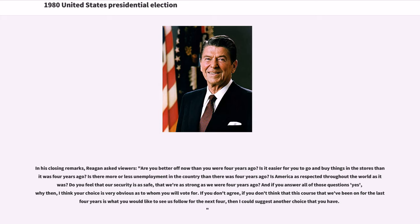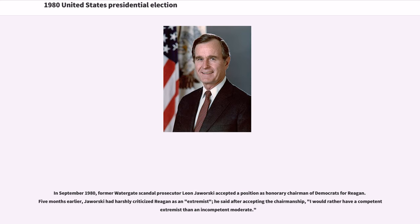Reagan asked: "Is it easier for you to go and buy things in the stores than it was four years ago? Is there more or less unemployment in the country than there was four years ago? Is America as respected throughout the world as it was? Do you feel that our security is as safe, that we're as strong as we were four years ago?" If the answers were no, Reagan suggested he was another choice. In September 1980, former Watergate scandal prosecutor Leon Jaworski accepted a position as honorary chairman of Democrats for Reagan, saying, "I would rather have a competent extremist than an incompetent moderate."